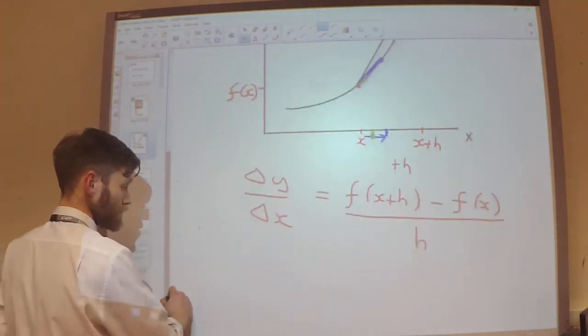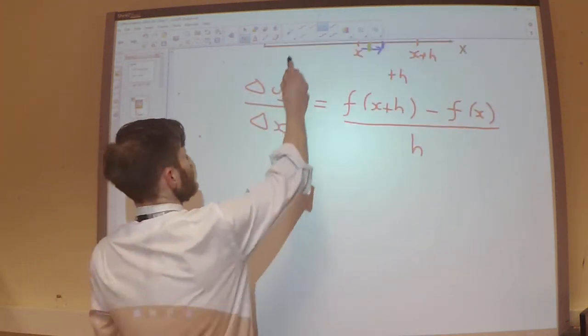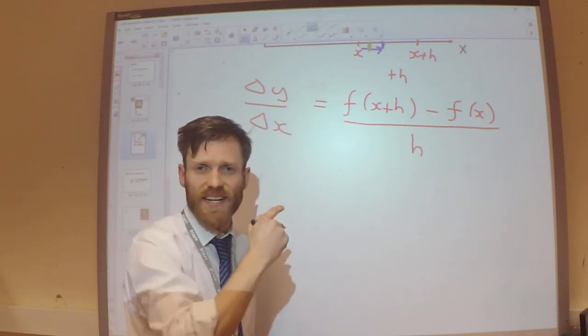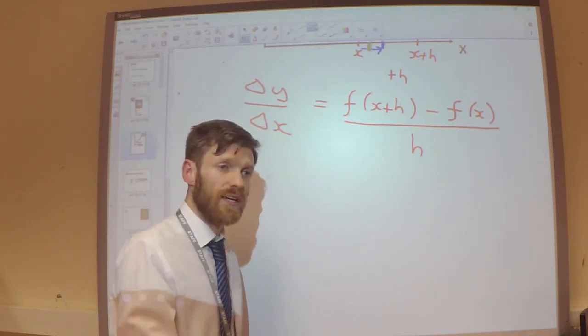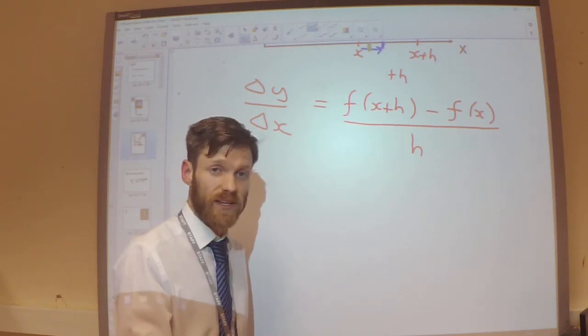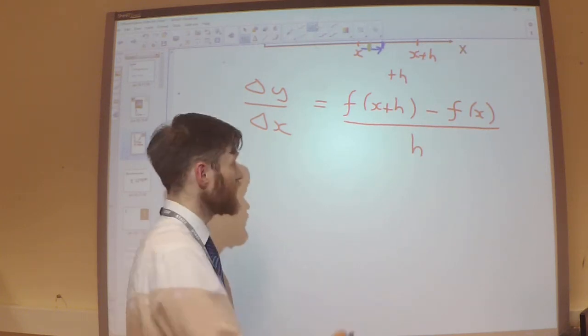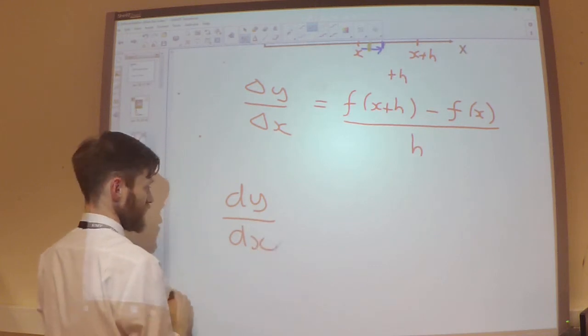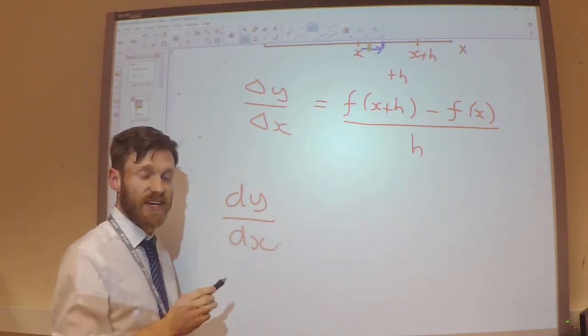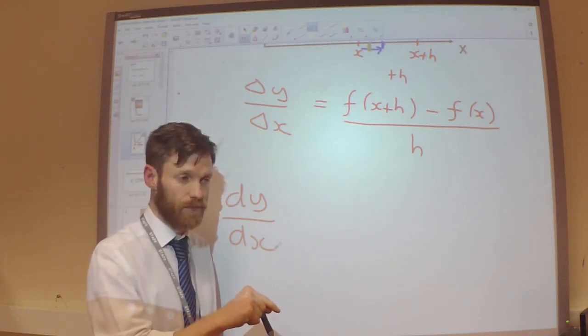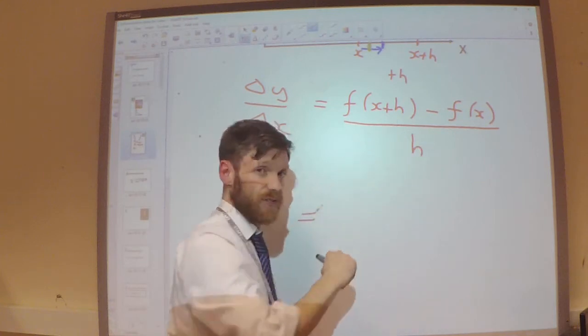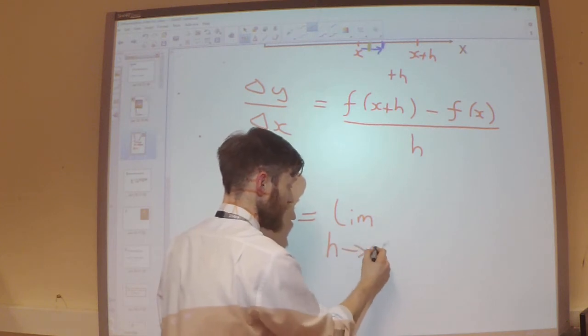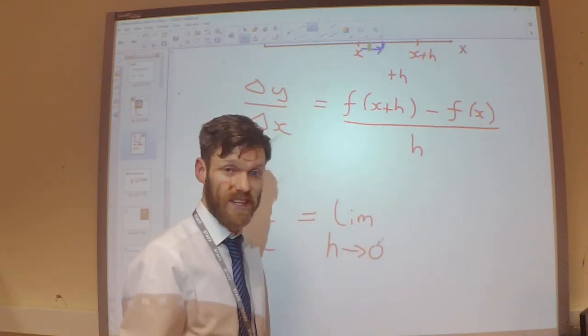So the way he wrote that down is he didn't use delta y and delta x anymore. Because this is representing a change in the x coordinates. And as I suggested, as I stated, we're not looking at the change in x coordinates anymore. What we're doing is we're looking at the gradient at a specific point. So he didn't use this notation anymore. What he used was dy by dx. So this is the change in the y coordinates with the change in x coordinates at a specific point. This was his approximation. But he said, in the limit, as h tends towards zero, this no longer becomes an approximation. This becomes accurate.